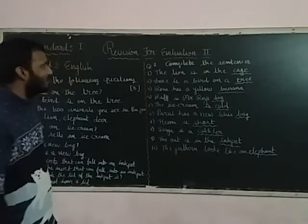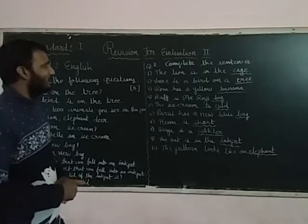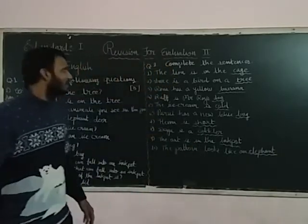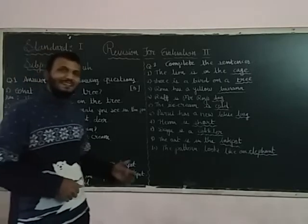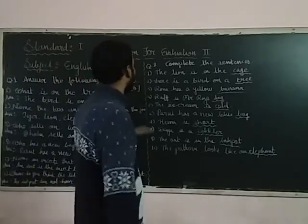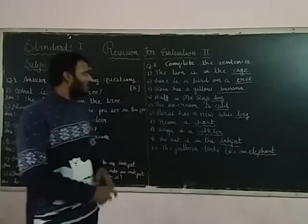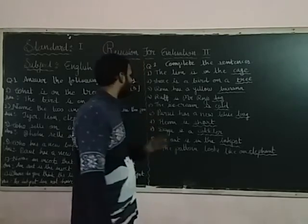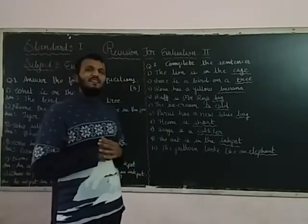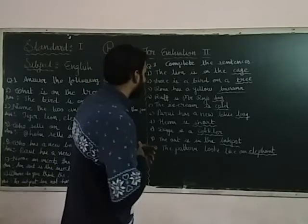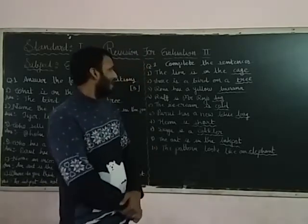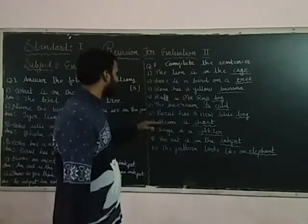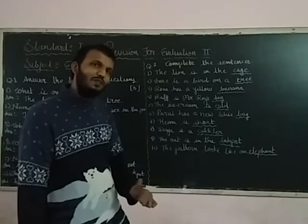Second number: There is a bird on a blank. Answer is: tree. Third number: My blank is yellow. Answer is: banana. Fourth number: The dog is Mr. Roy's blank. Answer is: dog. Fifth number: The ice cream is blank. Answer is: cold. Sixth number: Parul has a new blue blank. Answer is: bag. Seventh number: blank is shorter. Answer is: short.